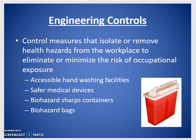Engineering controls isolate or remove health hazards from the workplace to eliminate or minimize the risk of occupational exposure. Hand washing is the number one way to prevent disease spread. Safe medical devices — like the needle locks on the syringes we'll be using — are another key control. You'll use those locks in both injections and phlebotomy, so get used to the various types.